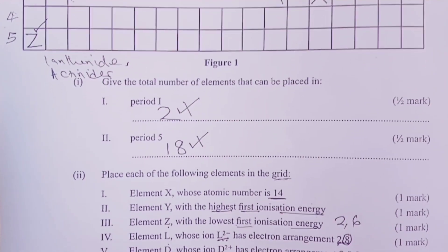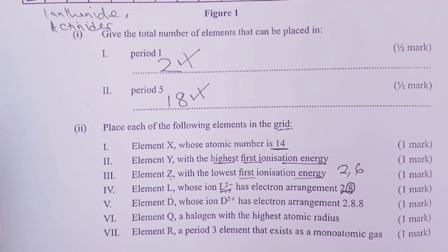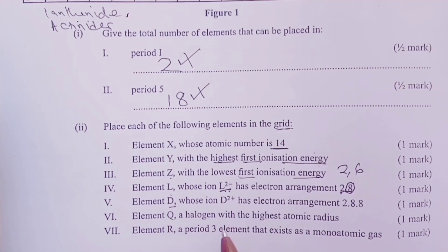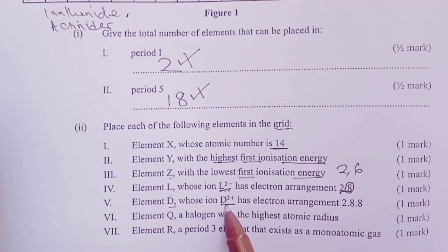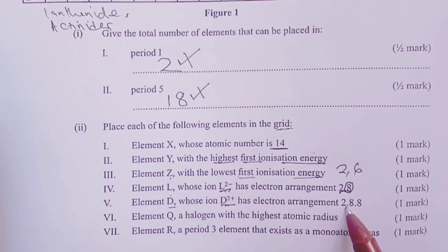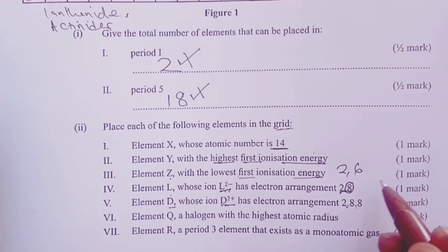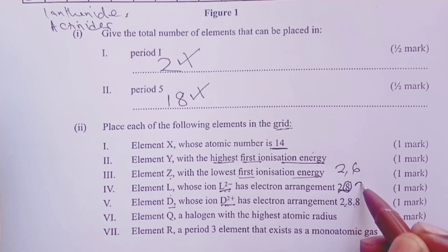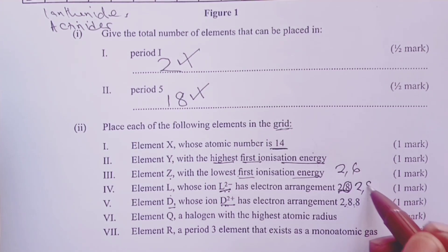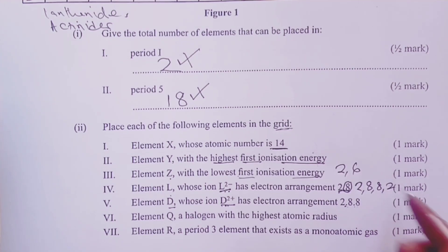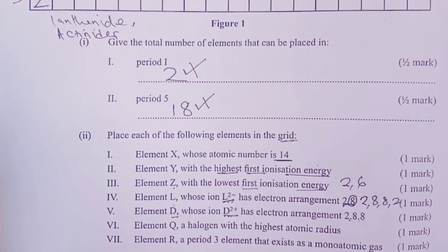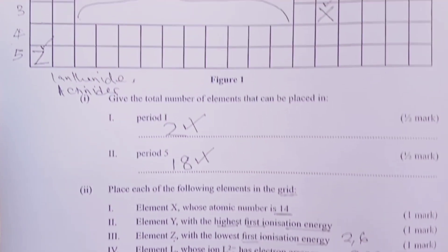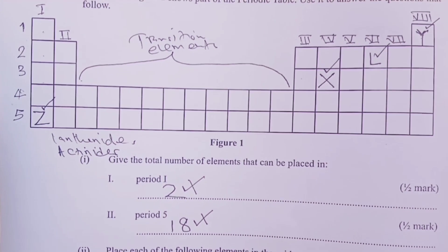Moving on, we are asked to place element D. Element D this time has an ion of 2 plus, which means it loses two electrons to form this ion. And the configuration of the ion is 2,8,8. So it means the original element or atom had a configuration of 2,8,8,2. That gives it atomic number 20.